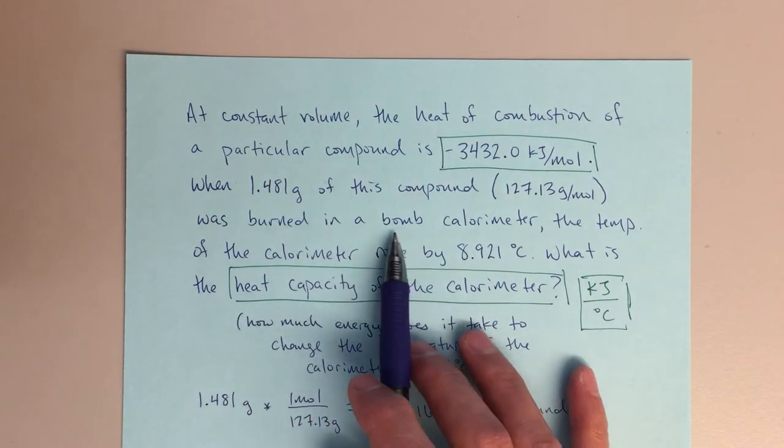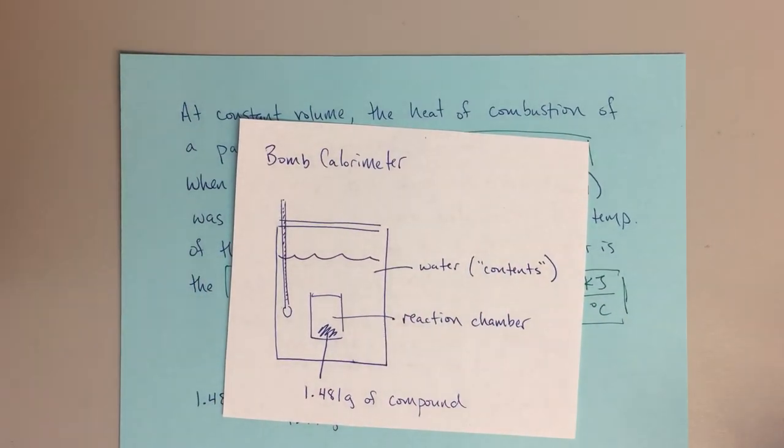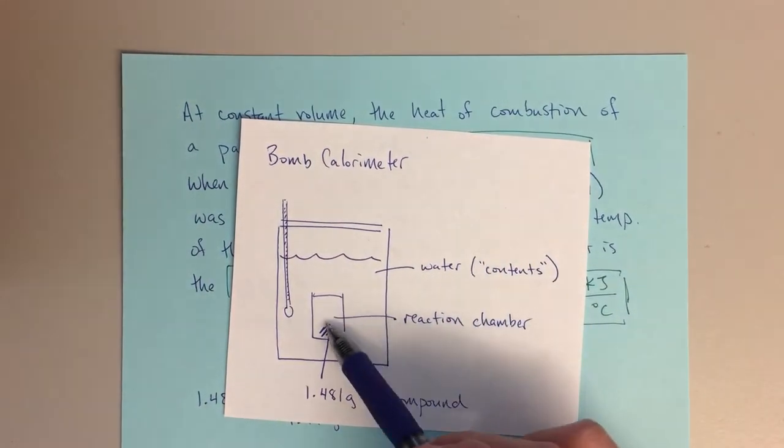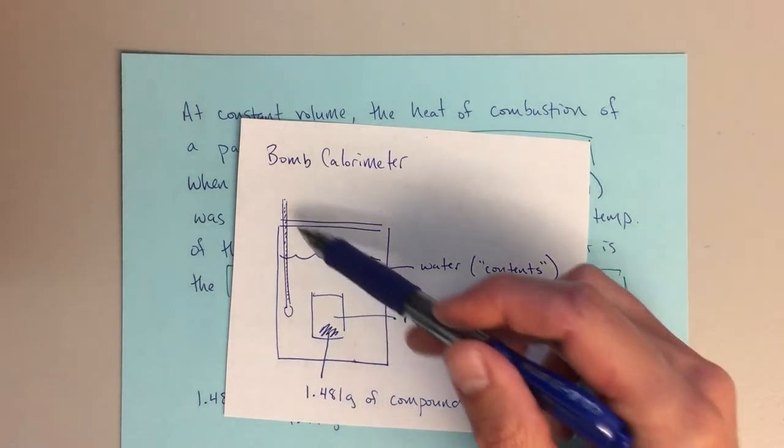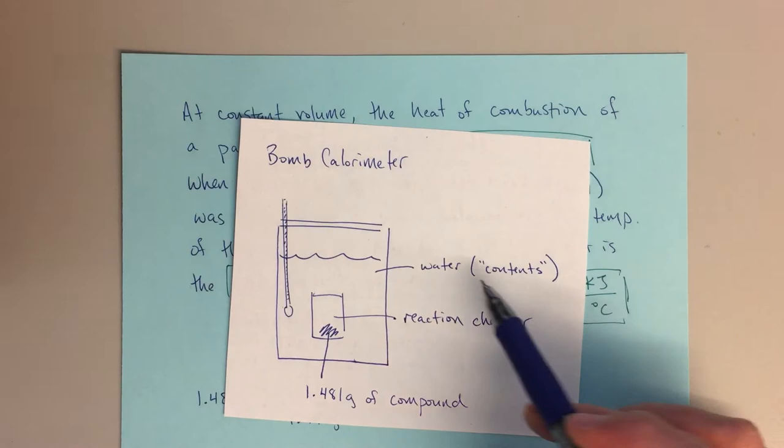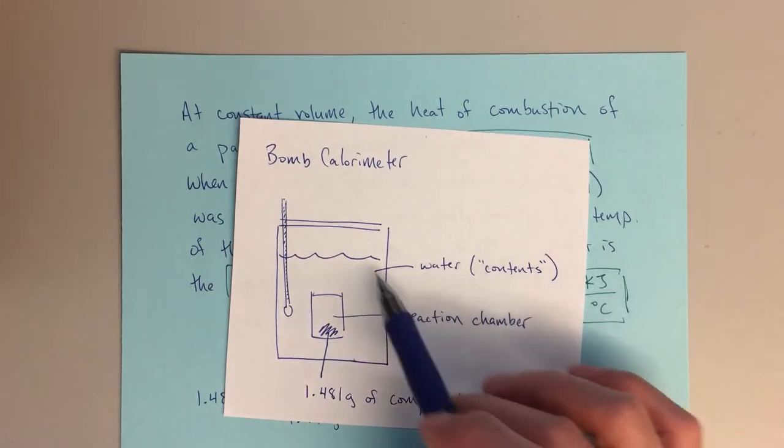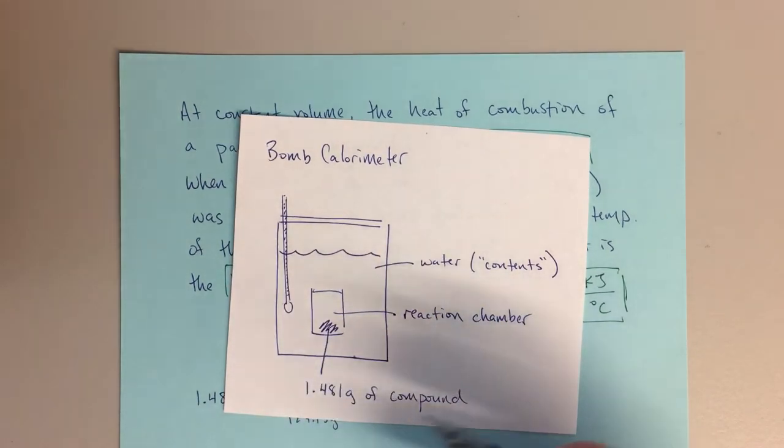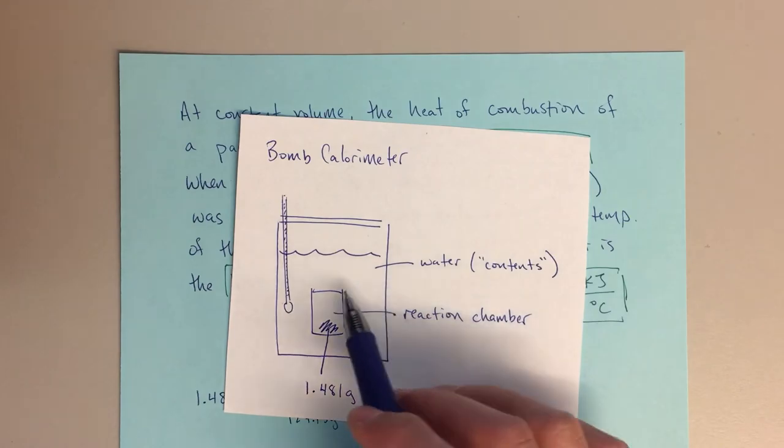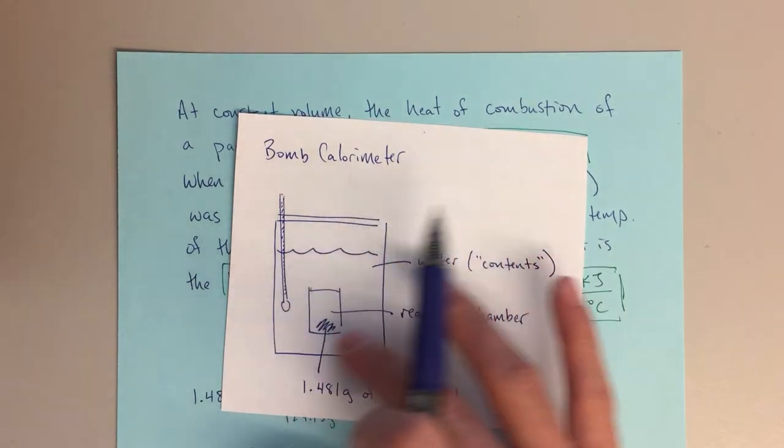We're going to burn it in a bomb calorimeter. So let's talk about bomb calorimeters really quickly. This is my picture of a bomb calorimeter. I've got a reaction chamber with my compound inside that reaction chamber. I've got a thermometer to measure the temperature change, and I've got water surrounding that, which we're going to call the contents of the calorimeter. This whole thing is going to have some heat capacity, so if I want to increase the temperature of the whole thing, there's going to be some heat capacity associated with that.